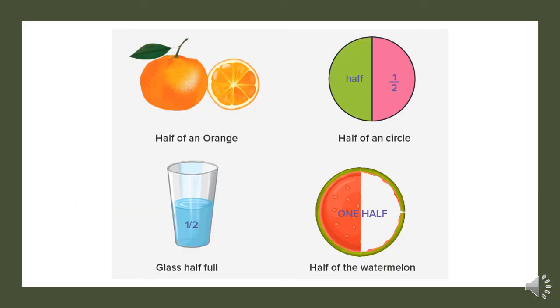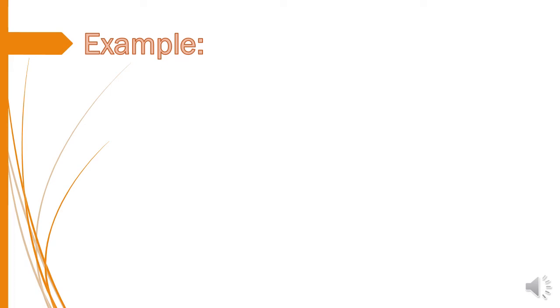In real life, half appears in many contexts: an orange divided into two equal parts gives half an orange; a circle divided into two equal parts gives half a circle; a glass filled only partway is a half glass of water; and one half of a watermelon means half is used. We write half as 1/2. This is how we use the concept of fractions in our real life. Let us see an example of dividing a figure into two equal halves.